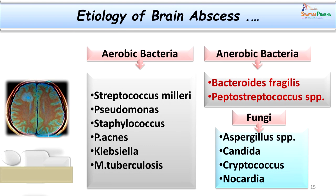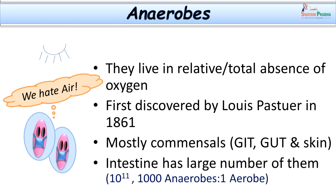There are also some fungi to keep in differential diagnosis. Fungi usually involved in brain abscess are Aspergillus species, Candida species, Cryptococcus, and Nocardia species. Fungal brain abscesses are usually more prevalent in immunocompromised patients or patients with malignancies or on long-term antibiotic treatment.